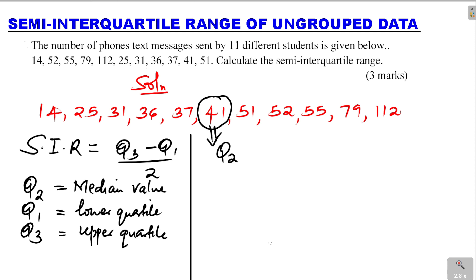Now we have two halves. The values to the right of 41, that is one half, the upper half. The values to the left of 41, this is the lower half.